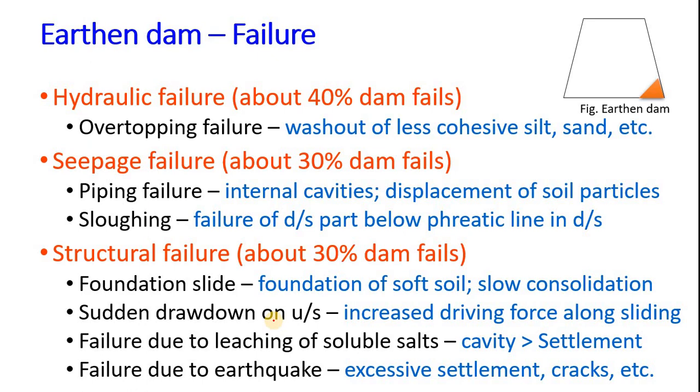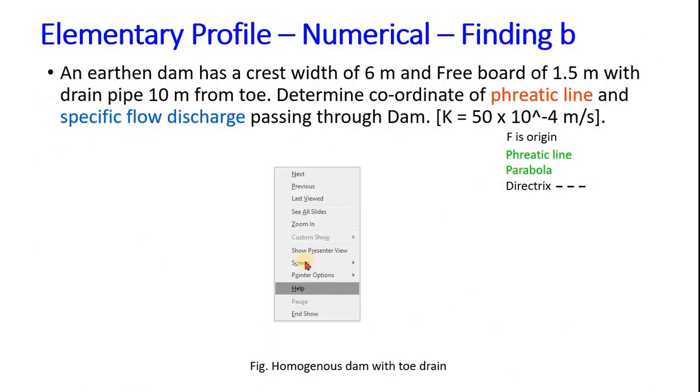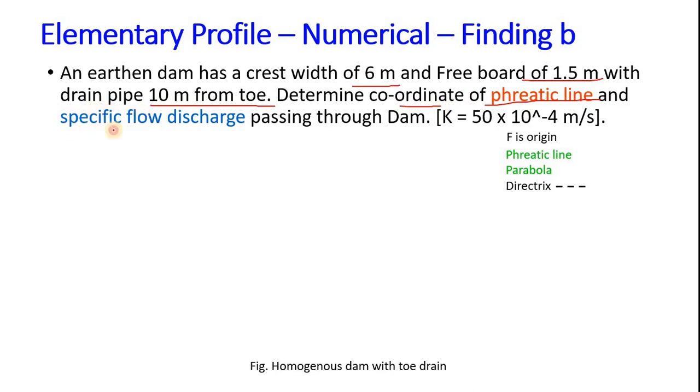These are the introductions of the earthen gravity dam. Now we will see how to solve this numerical. An earthen gravity dam has a crest width, crest width means top width of 6 meters, freeboard of 1.5 meters, drain pipe 10 meters from the toe. Now we have to determine the phreatic line ordinate and the specific flow discharge passing through the dam. The value of k is given here. We already know it is trapezoidal in shape.